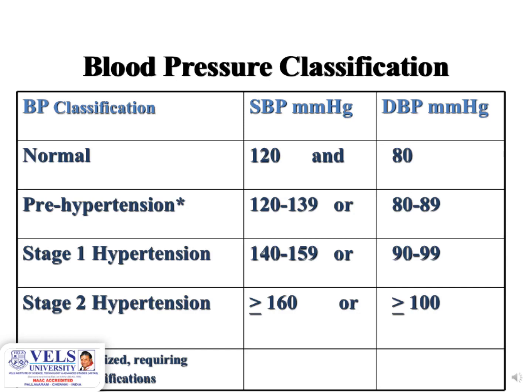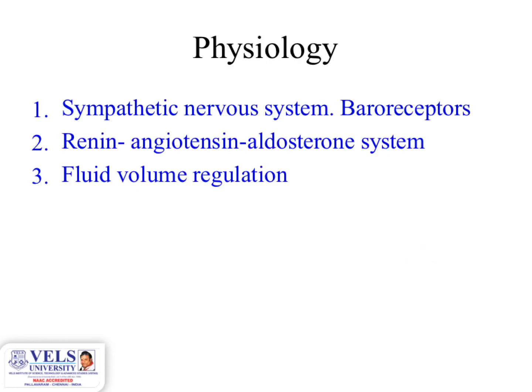Hypertension is further classified into three stages: prehypertension, stage 1 hypertension, and stage 2 hypertension. Normal blood pressure is 120/80 mmHg. Prehypertension: systolic 120–139 mmHg, diastolic 80–89 mmHg. Stage 1 hypertension: systolic 140–159 mmHg, diastolic 90–99 mmHg. Stage 2 hypertension: systolic greater than or equal to 160 mmHg, diastolic greater than or equal to 100 mmHg.